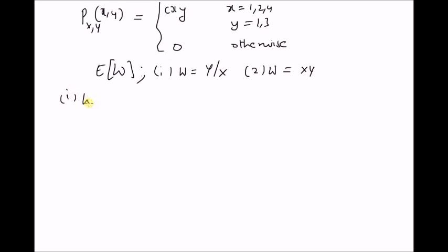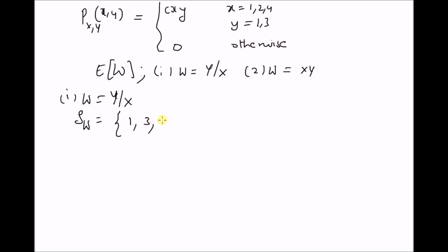In the first case, when W = y/x, the range of W — that is, the values of W corresponding to this function — are: for x=1, y=1, the ratio is 1; for x=1, y=3, it is 3; for x=2, y=1, it is 1/2; similarly 3/2, 1/4, and 3/4. So this is the range of values of W.